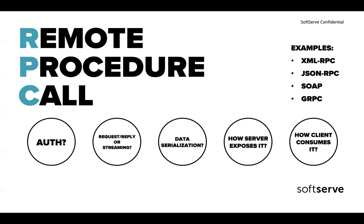If you want to build an RPC system, there are a few questions to ask yourself: What about authentication? Are you going to do request-reply or start with streaming? How about data serialization? We've seen examples like XMLRPC, JSONRPC, or SOAP — they use specific formats that were great but really huge. Do you want binary serialization? How will the server expose it? How will a client consume it — through WSDL or a SOAP URL that provides all available services?